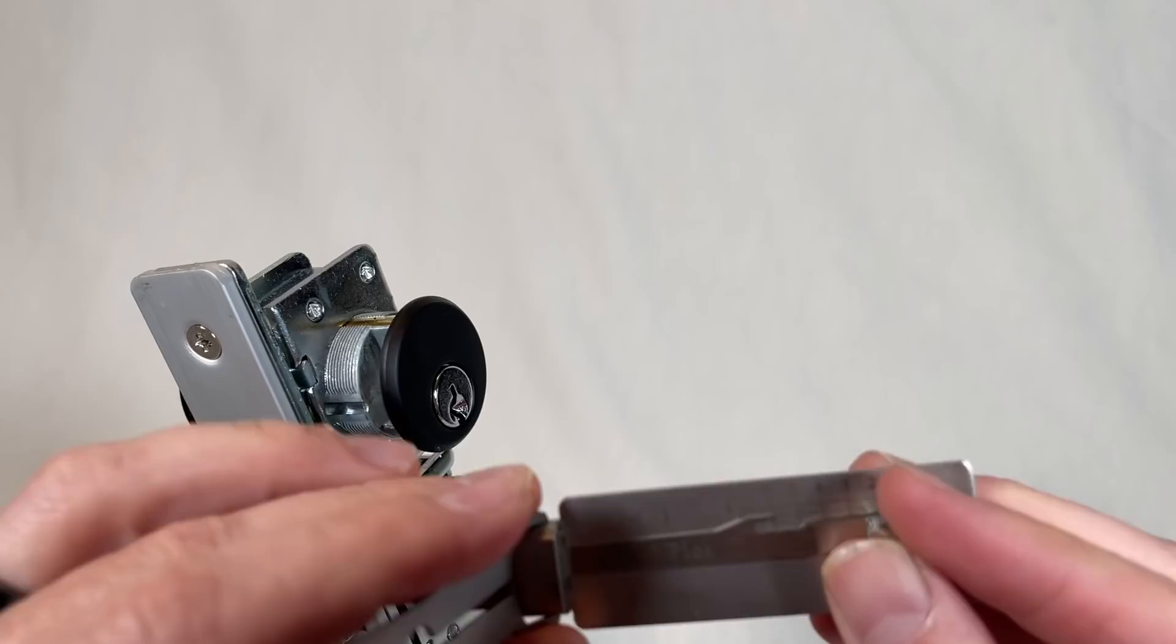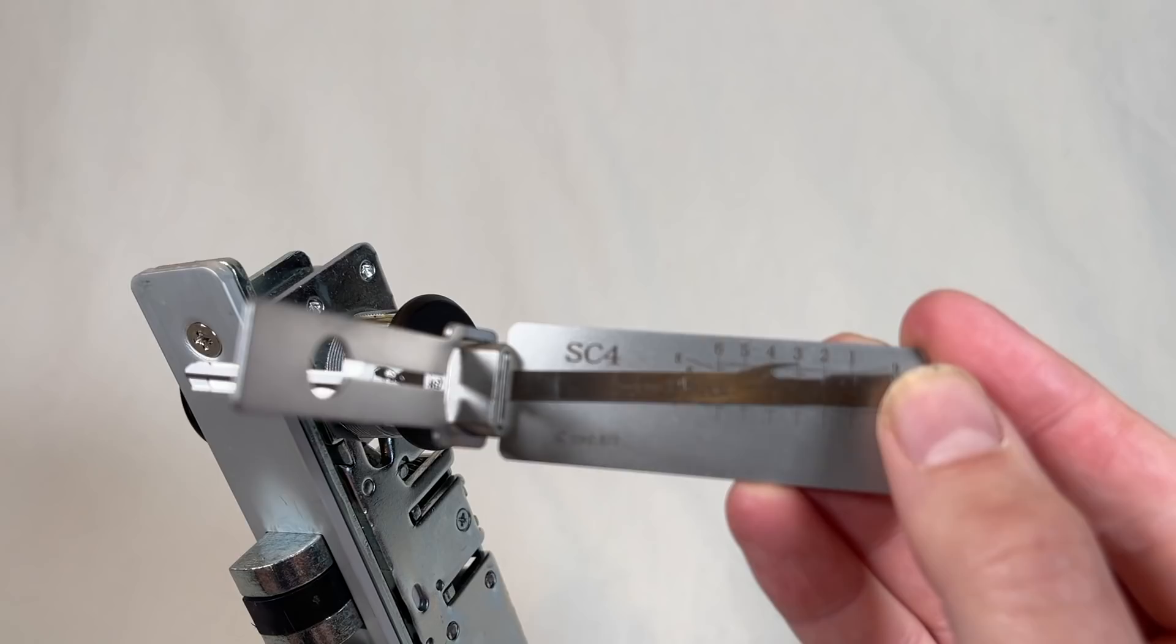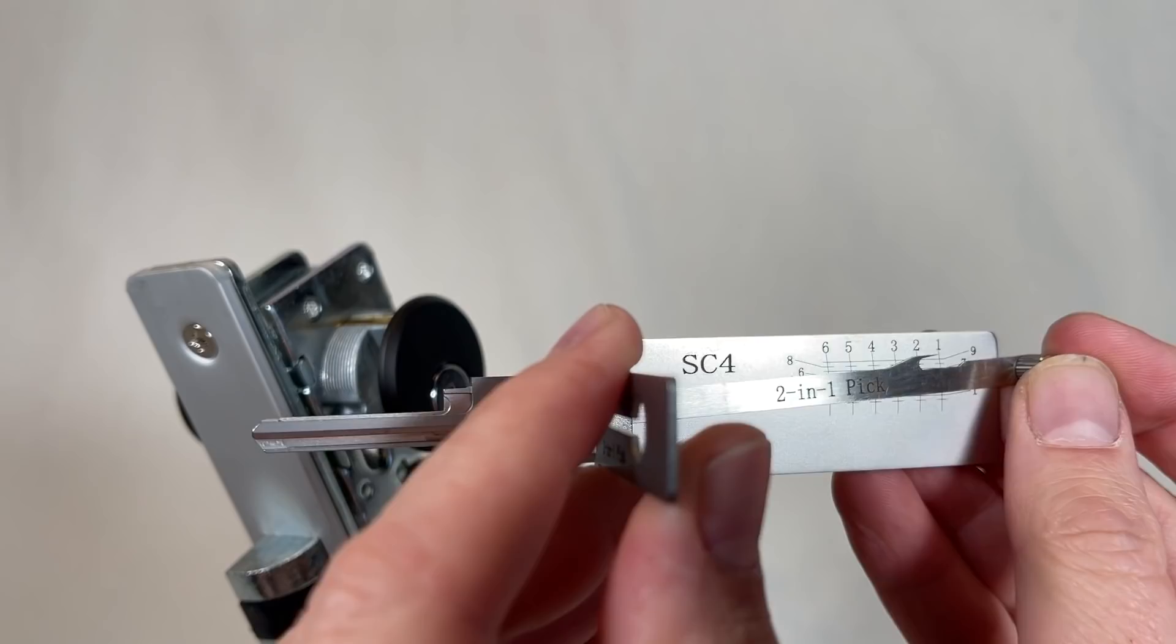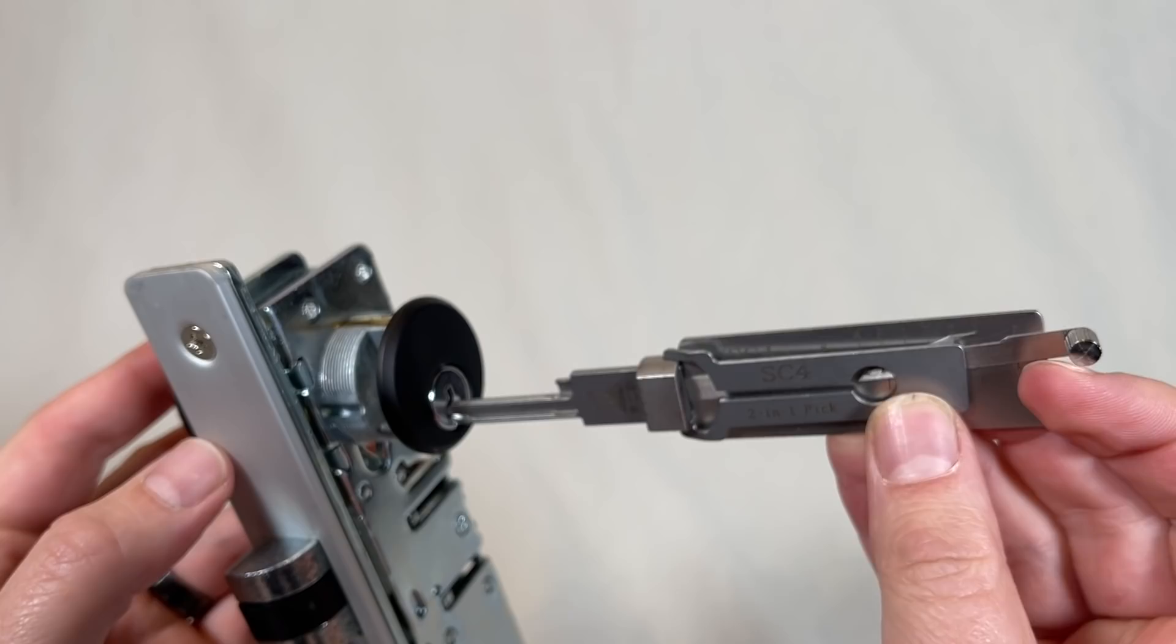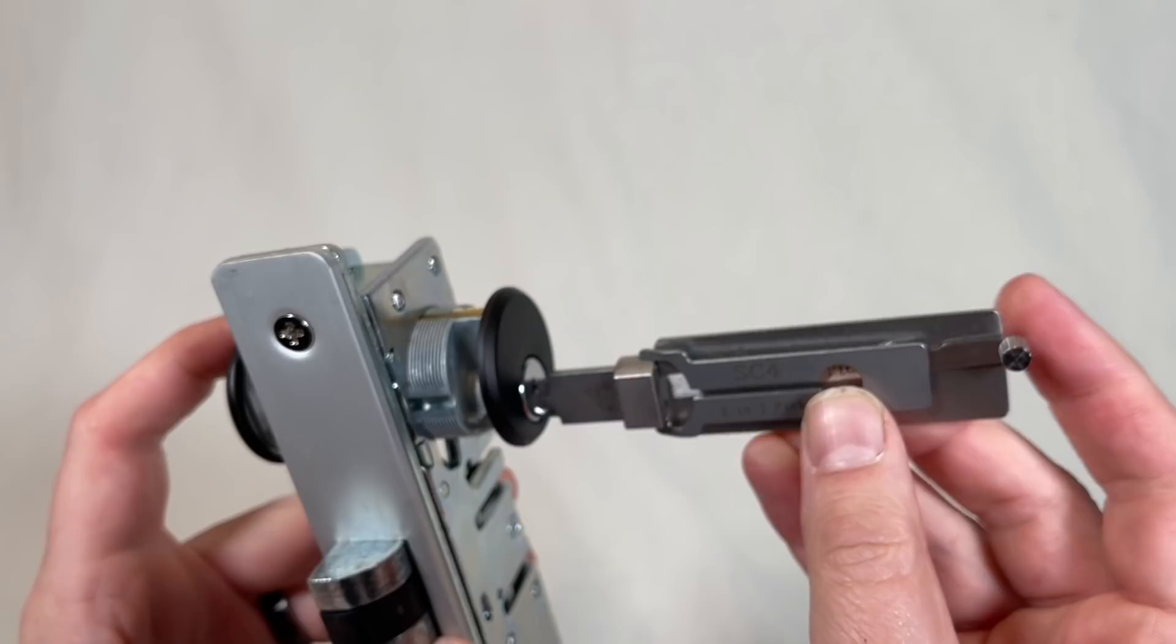Before we insert this, I will mention manipulating the picking arm, the two-in-one arm. Whenever you're doing that sort of thing, you want to make sure that you bottom out the arm down at the nine depth before you move it in between chambers or before you insert the entire tool into the lock. You don't want to crash into anything. Now, if we try to insert this in the lock, let's see what we get.